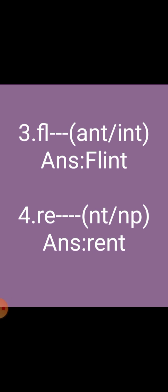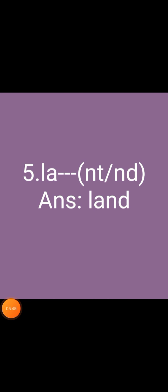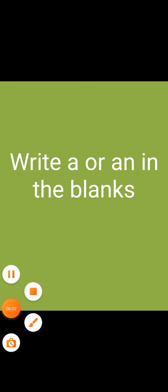Fourth one: re + (NT or NP) — correct answer is rent, R-E-N-T. Fifth one: la + (NT or ND) — the answer is land, L-A-N-D. Now write A or An in the blanks.